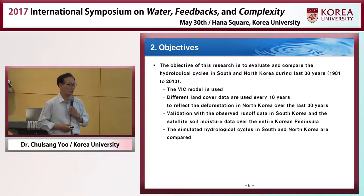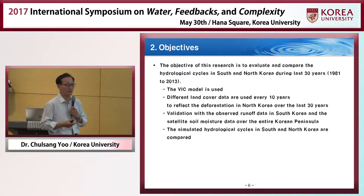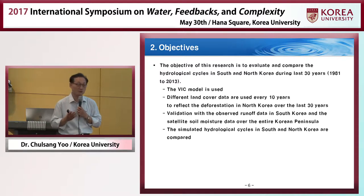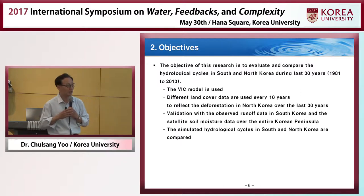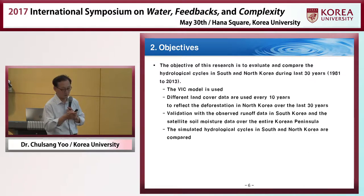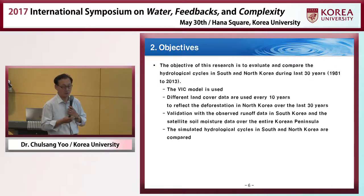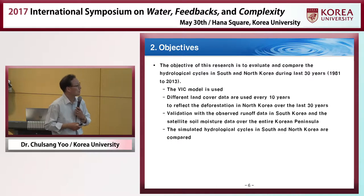Now let me summarize the objective of this study. We want to compare what has happened in South Korea and North Korea. Hydrologic data in North Korea is not available — some precipitation and temperature data are available, but that is the maximum. No observation data about runoff or soil moisture is available at all. So we decided to use the VIC model. To consider the change of land cover in North Korea, we use different land cover data for every 10 years, and we use runoff data observed in South Korea for the validation of the modeling study.